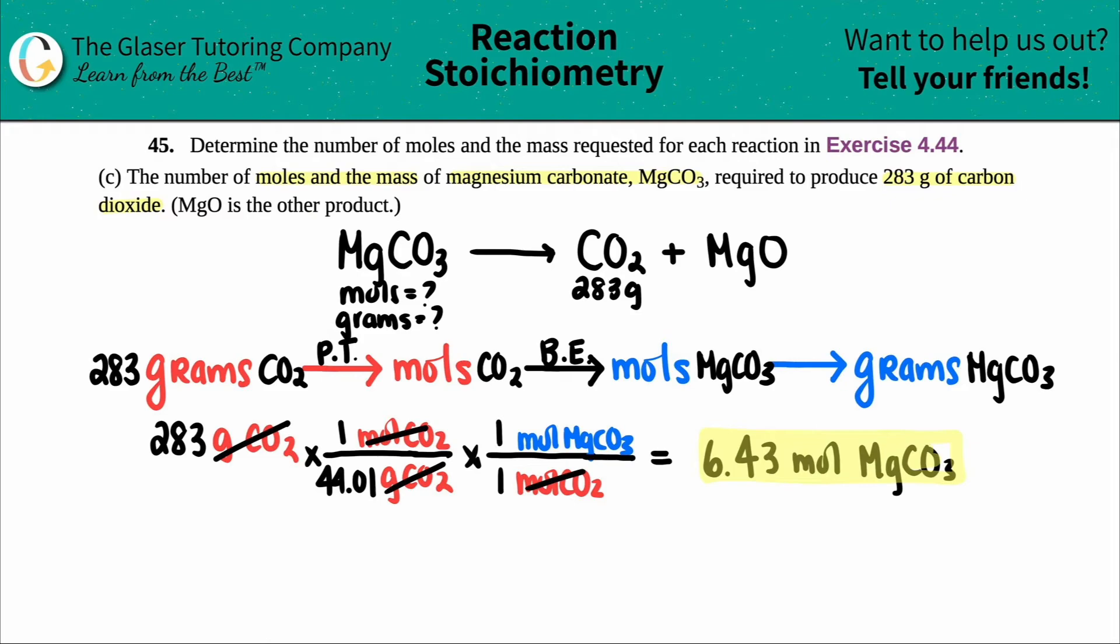Now I'm just going to keep going. I just found out the moles of magnesium carbonate. The second thing that they wanted me to find out was what was the mass, so I'm just going to keep on with this number. So 6.43, and I'll still color code it, mole of MgCO3. We kind of do the same thing as before. Multiply by that ratio. You don't want this unit anymore, so that goes on the bottom. The unit that you want goes on top, which is grams of MgCO3.